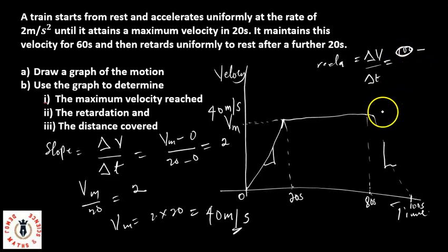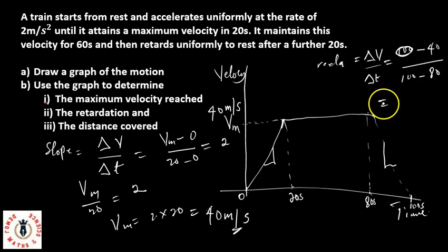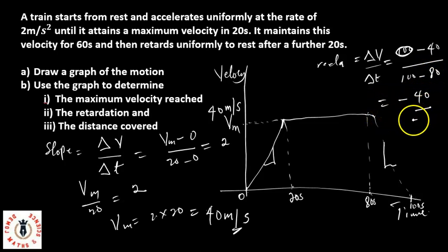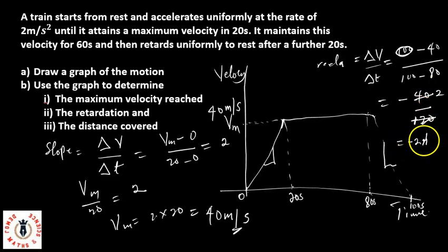The final velocity is 0 minus the initial velocity of 40, over the final time 100 minus 80. That gives minus 40 over 20, so the retardation is minus 2 meters per second squared.